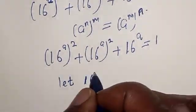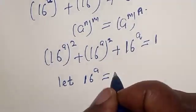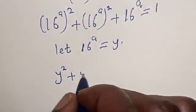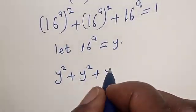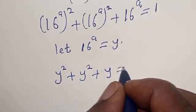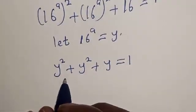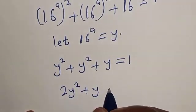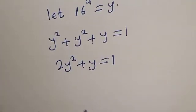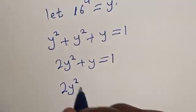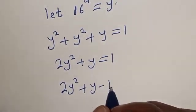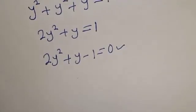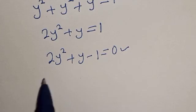Let 16 raised to the power a equal y. Then y squared plus y squared plus y is equal to 1. This gives us 2y squared plus y is equal to 1. Now 2y squared plus y minus 1 is equal to 0. This is a quadratic equation. Let's solve using factoring.